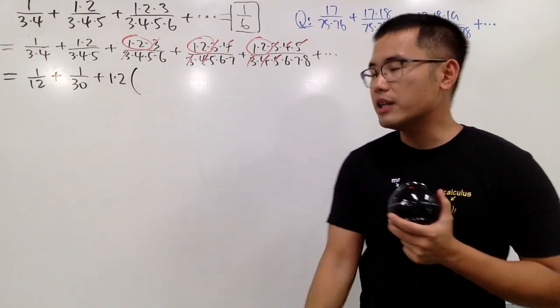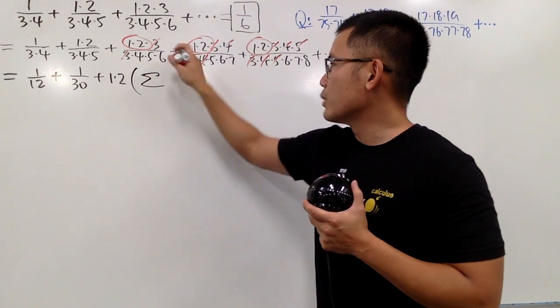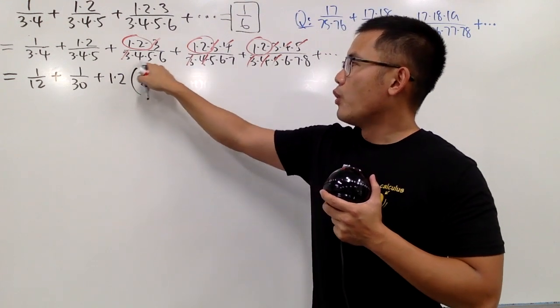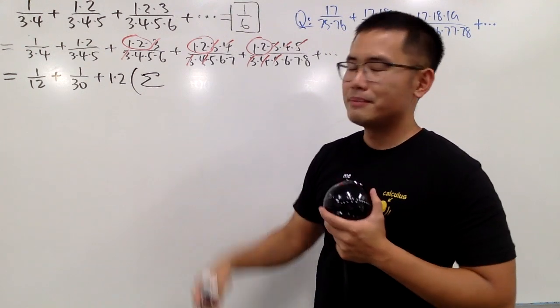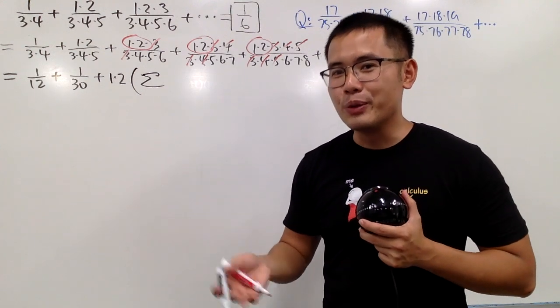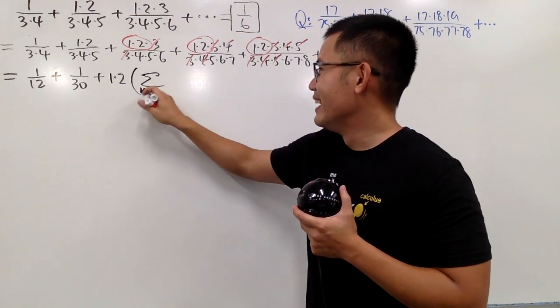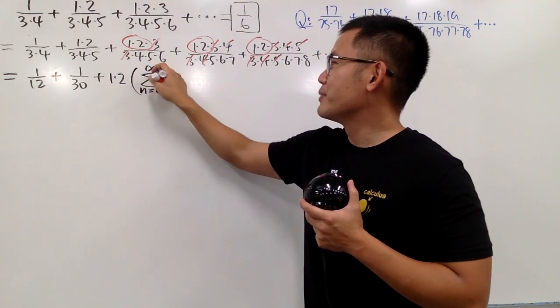Now, for these ones right here, we can put them in the sigma notation. So we have the sum because we're adding this up. Four times five times six. So I can just let n equal to five. Just joking. I can let n equal to four. It'll be easier. n equal to four. And up to infinity, of course.